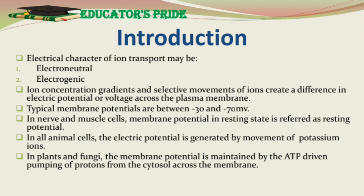Typical membrane potentials are between –30 and –70 mV. The minus sign indicates that the inside of cells is always negative with respect to the outside. The nerve and muscle cell membrane potential in the resting state is called resting potential. For many cells, the principal diffusing ions are sodium, potassium, and chloride. In all animal cells, the electric potential across the plasma membrane is generated by movement of cytosolic potassium ions through resting potassium ion channels to the external medium. In plants and fungi, the membrane potential is maintained by the ATP-driven pumping of protons from the cytosol across the membrane.